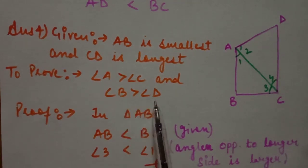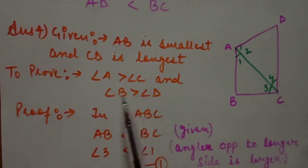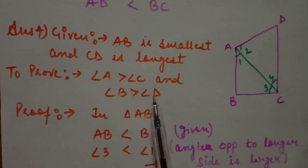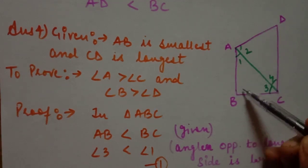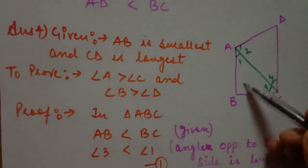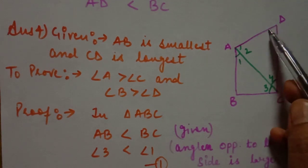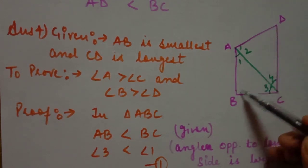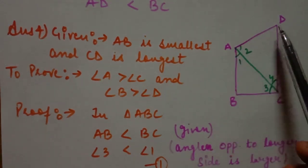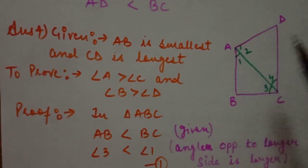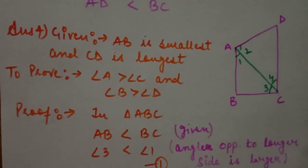Students should try the second result — angle B is greater than angle D — by themselves. The approach is the same: draw line BD, which divides angle B and angle D each into two parts. Then take triangles ADB and BCD and apply the same properties. Find two equations, add them, and the result follows.